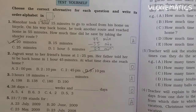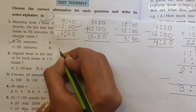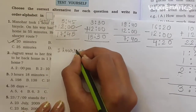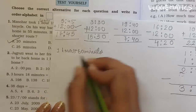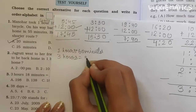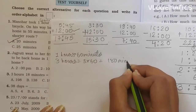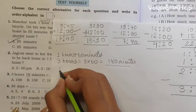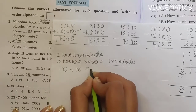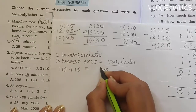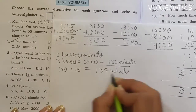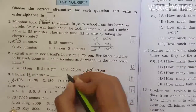Number 3: 3 hours 18 minutes equals how many minutes? 1 hour equals 60 minutes, so 3 hours equals 180 minutes. 180 plus 18 equals 198 minutes. Answer is A — 198 minutes.